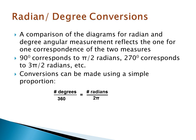It must be obvious at this point that you can convert radians to degrees and vice versa. We can use a simple proportion to do that: the number of degrees is to 360 as the number of radians is to 2 pi.